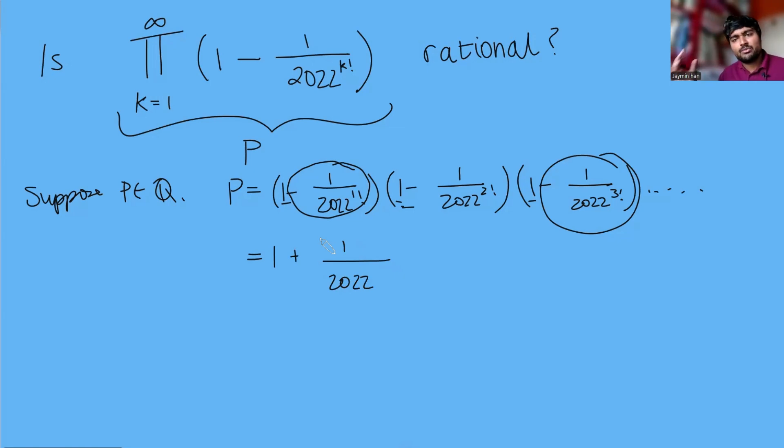1 factorial is 1, 3 factorial is 6, add them up is 7. How else could I create a term? I could choose this term here, this term here, this term here and then ones from all the other brackets as well. I've got a triple negative there so that's going to give me a minus 1 all divided by 2022 to the 1 factorial plus 2 factorial plus 3 factorial which is 9. So I'm going to get terms like that and obviously there's infinitely many more.